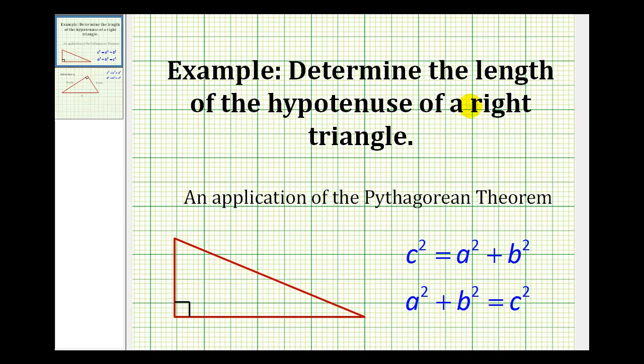Welcome to an example of determining the length of the hypotenuse of a right triangle using the Pythagorean Theorem. You'll see the Pythagorean Theorem written two ways. C squared equals A squared plus B squared, or A squared plus B squared equals C squared.